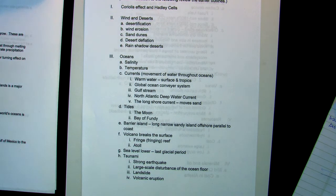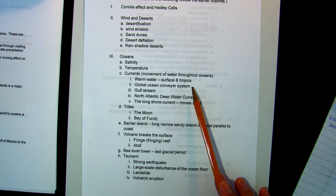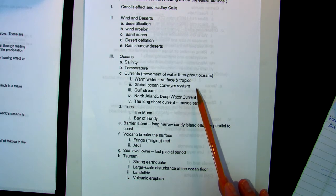Currents are the movement of water throughout the ocean. We see warm water, less salty, at the surface, particularly in the tropics. The global ocean conveyor system is the movement of all the saltwater on the earth around the earth through the different currents.